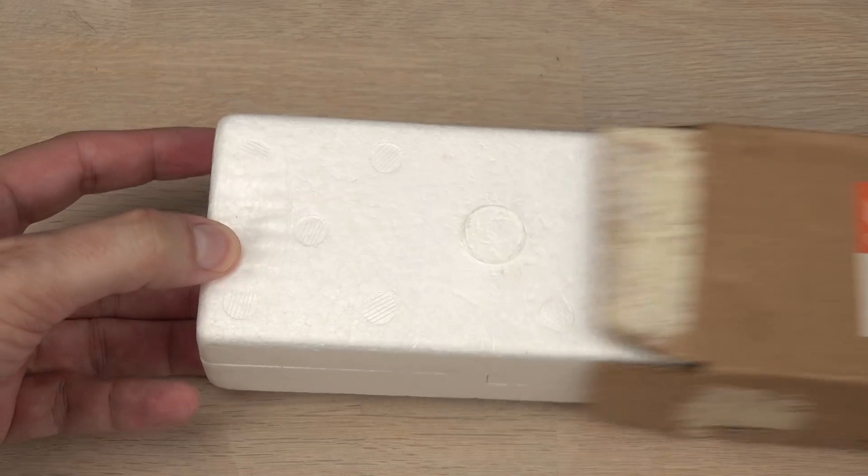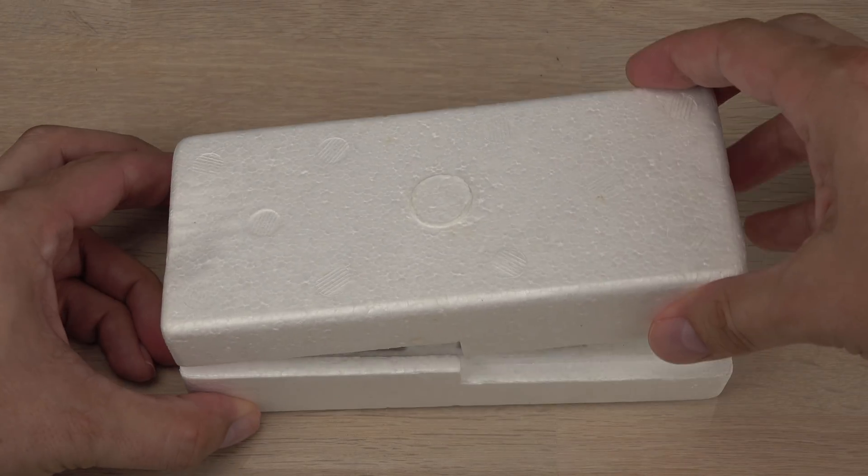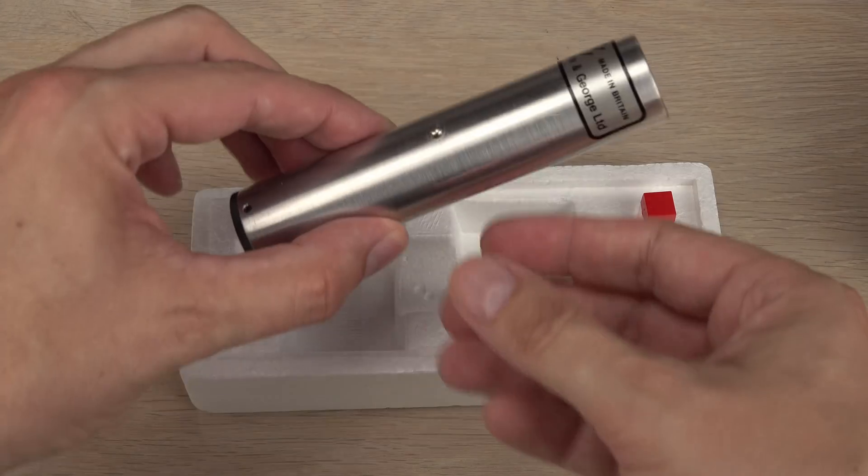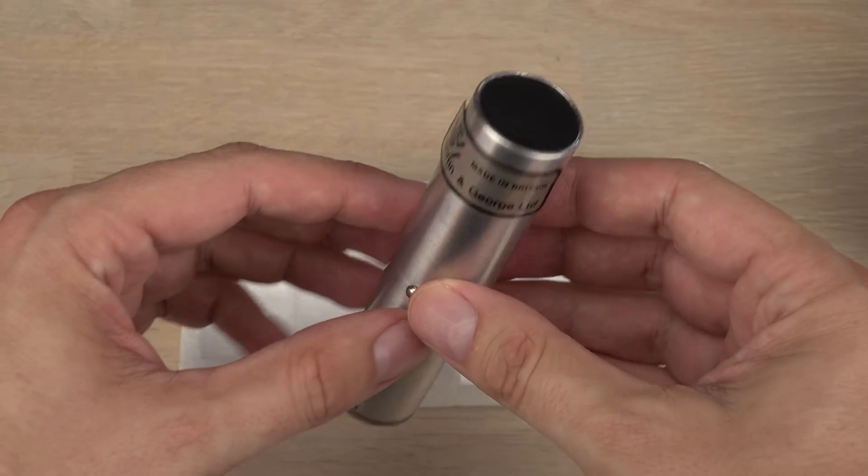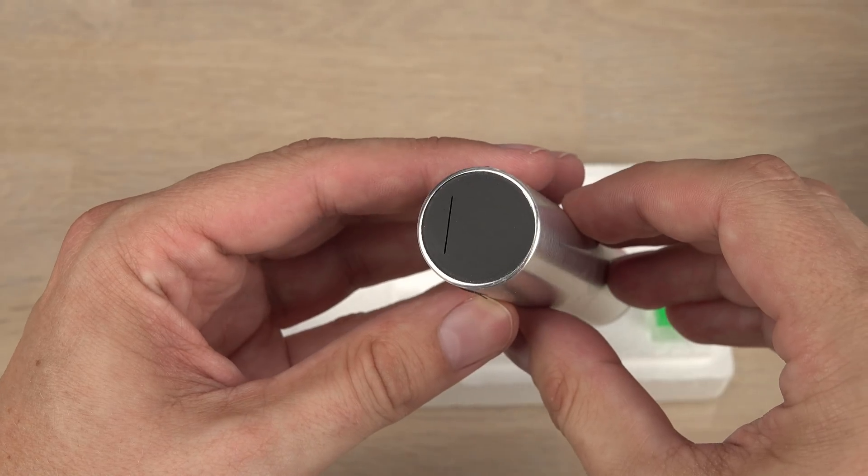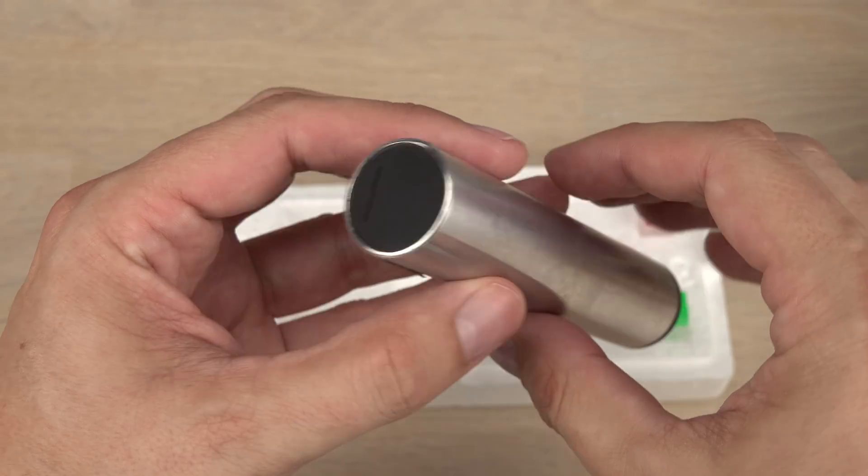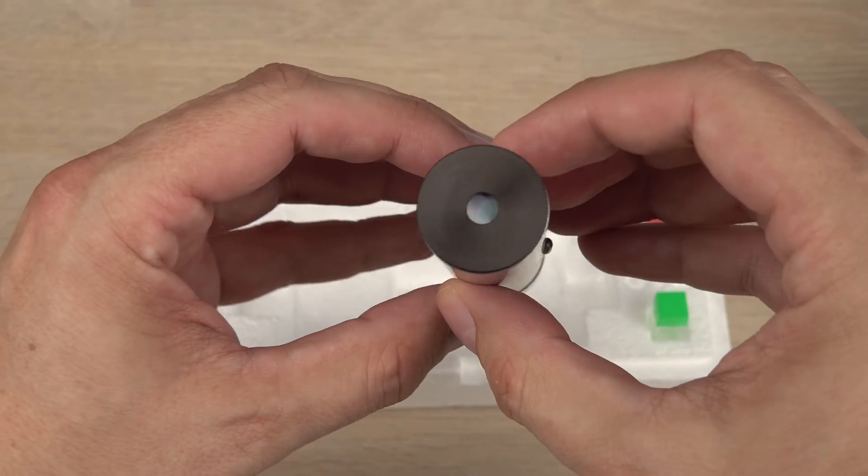I have this direct vision spectroscope. Nothing special. Just a tube with a slit at one end letting light in on a diffraction grating at the viewing end. This will split any incoming light into its spectrum of colors. Like a prism will split sunlight into the colors of the rainbow.